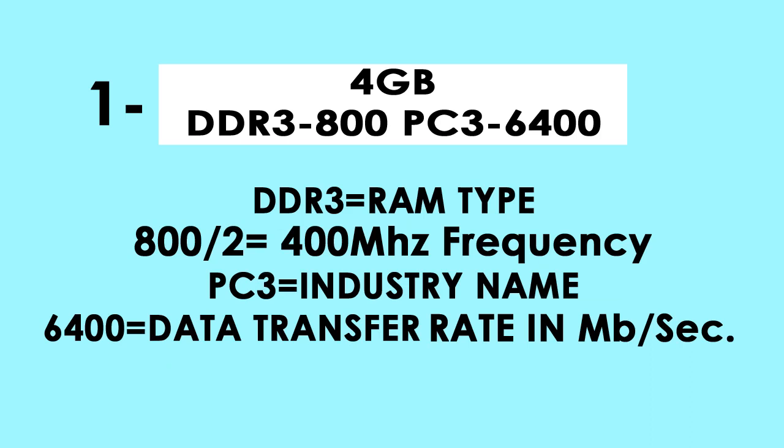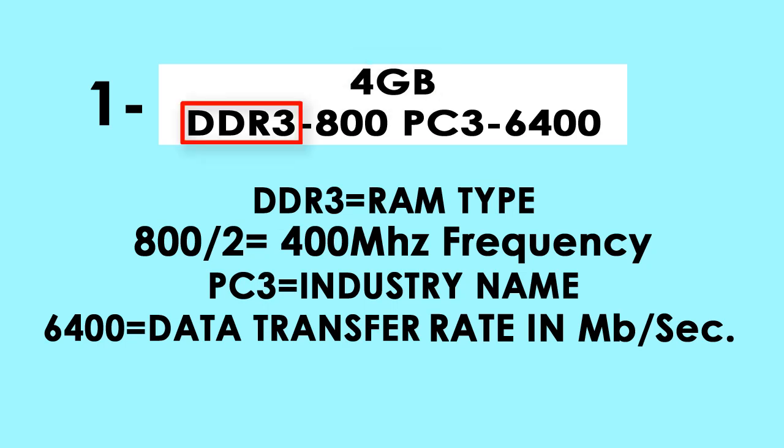This is an example of a 4GB DDR3 RAM. Let's learn how to read RAM specifications. 4GB indicates that 4GB of data can be stored in this RAM. DDR3 shows the generation of DDR RAM.